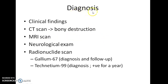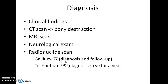How do you diagnose a case of malignant otitis externa? Clinical findings are helpful. CT scan shows bony destruction. MRI scan, neurological examination, and radionuclide scan are also used. Gallium-67 scan is useful for diagnosis and follow-up. Technetium-99 scan is useful only for diagnosis, as it remains positive for a long time.